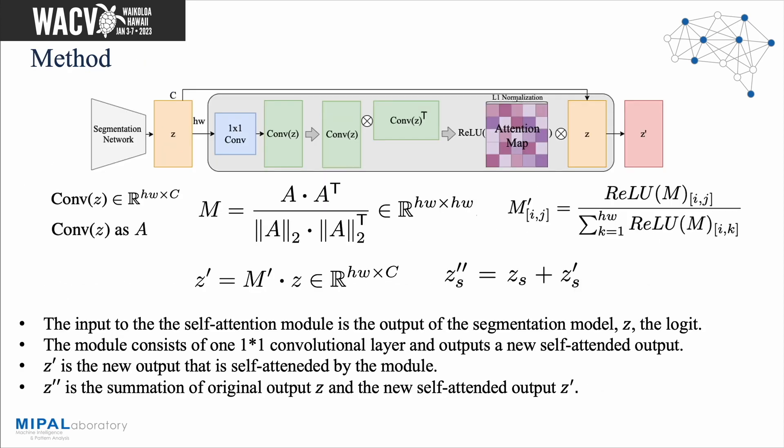This is the figure of the self-attention model. It takes the output of the segmentation model — the logit — as input. It then creates a self-attention map using a one-by-one convolutional layer by outer-producting it. We apply ReLU activation on the attention map and L1-normalize each row of the map. The module outputs a new self-attended logit Z''. Z' is a summation of the original output of the segmentation model and the new self-attended output Z'.